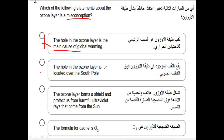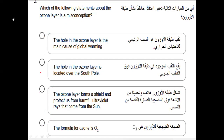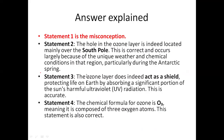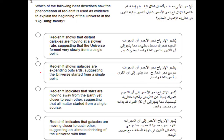The correct statements are: the hole in the ozone layer is located over the South Pole; the ozone layer forms a shield to protect us; and the formula of ozone is O3. So the answer — the misconception — is that the hole in the ozone layer is the main cause of global warming. Statement one is the misconception; the others are correct.